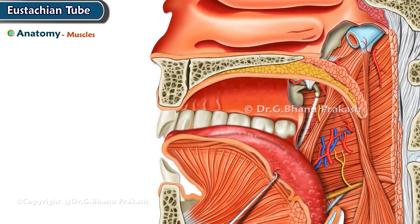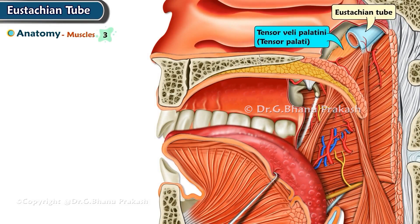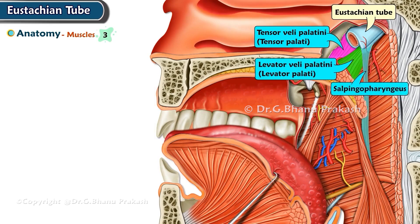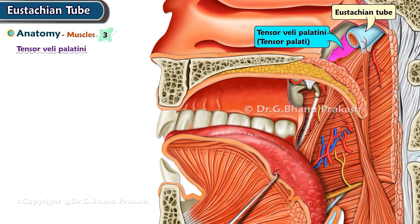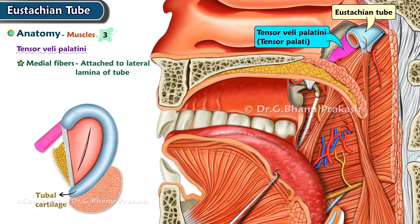Muscles of the Eustachian tube. There are three muscles related to the Eustachian tube: tensor veli palatini, levator veli palatini, and salpingopharyngeus. The medial fibers of the tensor veli palatini muscle are attached to the lateral lamina of the tube. When there is contraction of this muscle, the tube opens.